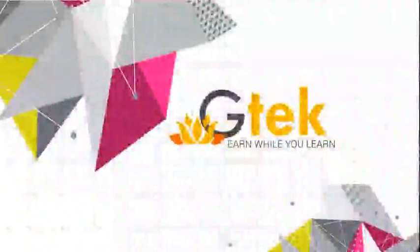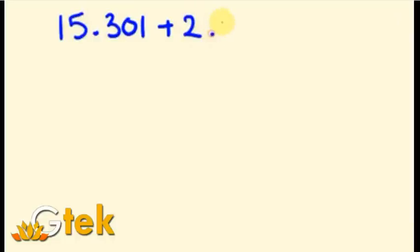Welcome to GTECH. Today we are going to see about adding decimal numbers. Let us consider the question as 15.301 plus 2.9 plus 0.07.